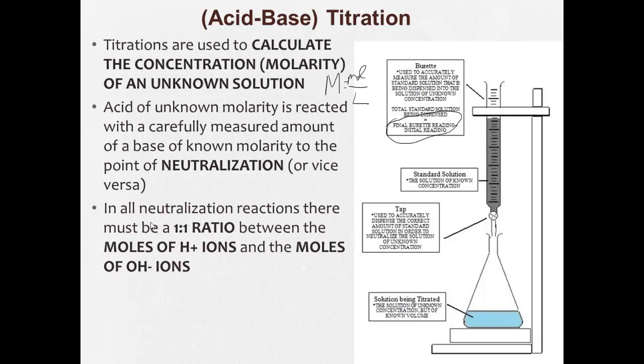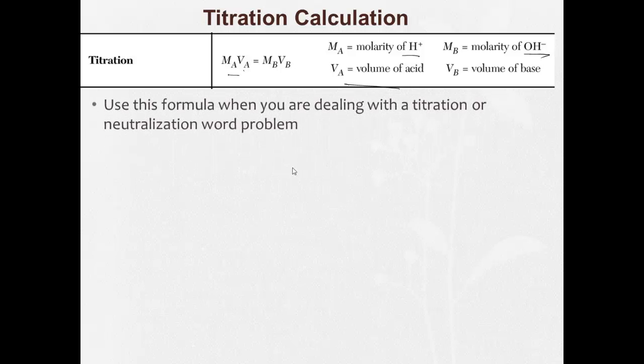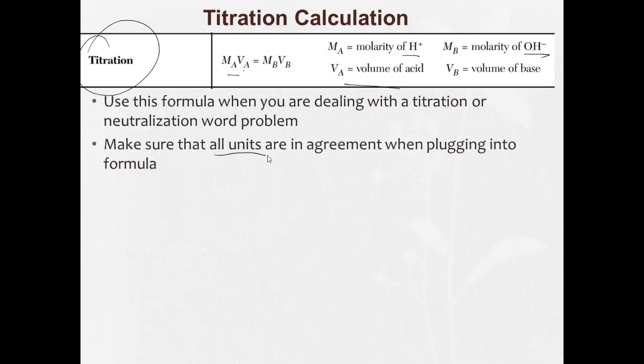In all neutralization reactions, there must be a one to one ratio between the moles of hydrogen ions and the moles of hydroxide ions. And then we do a calculation. So the titration calculation from your reference table, MAVA equals MBVB. Where MA is the molarity of your acid, or the H+, the VA is the volume of that acid. The MB is the molarity of your base, the molarity of the hydroxide ions, times the volume of the base. So anytime we're dealing with titration and neutralization work problem, we're going to use this titration formula. Make sure all units are in agreement. If we're using milliliters for volume here, we better use milliliters for volume here. Then they'll cancel out, and you'll get the right answer.